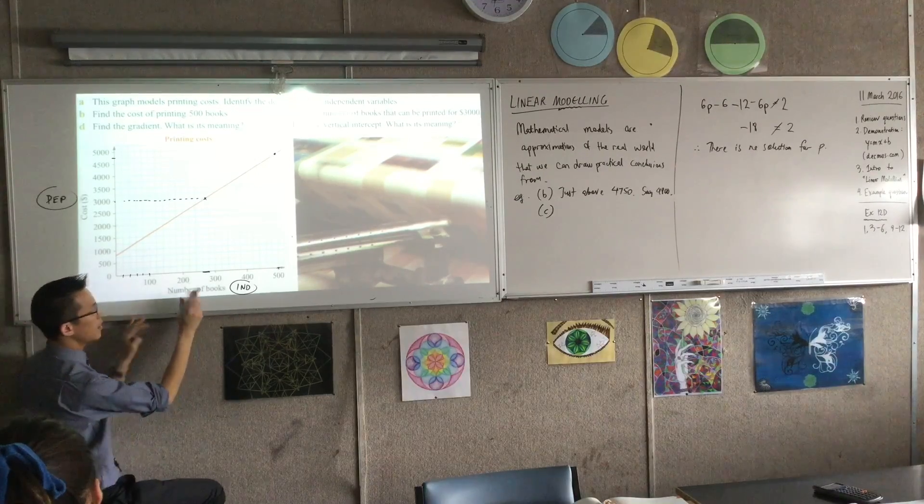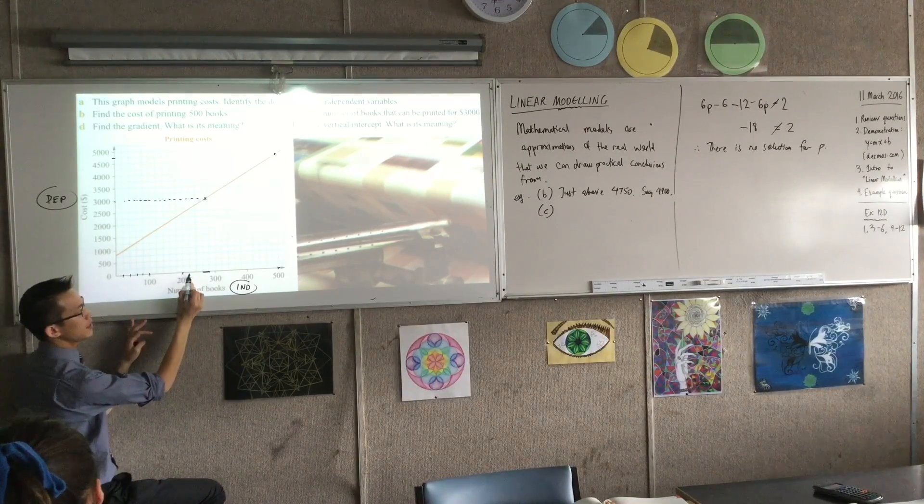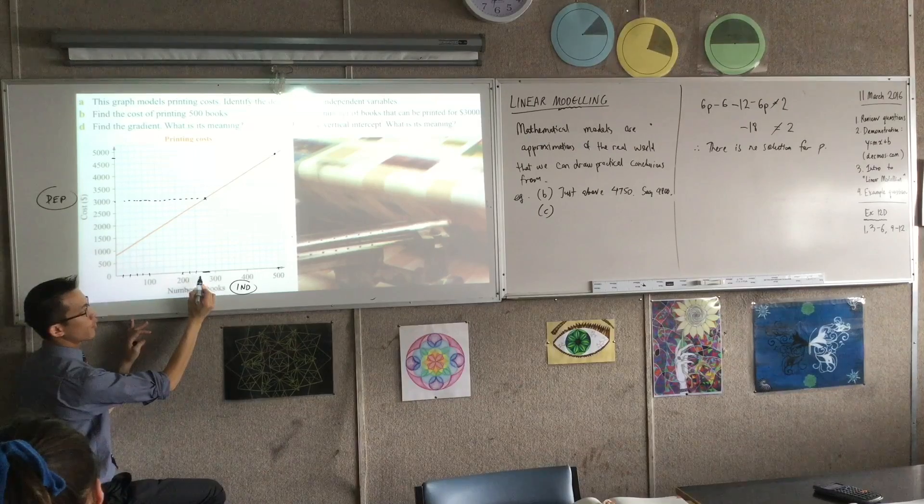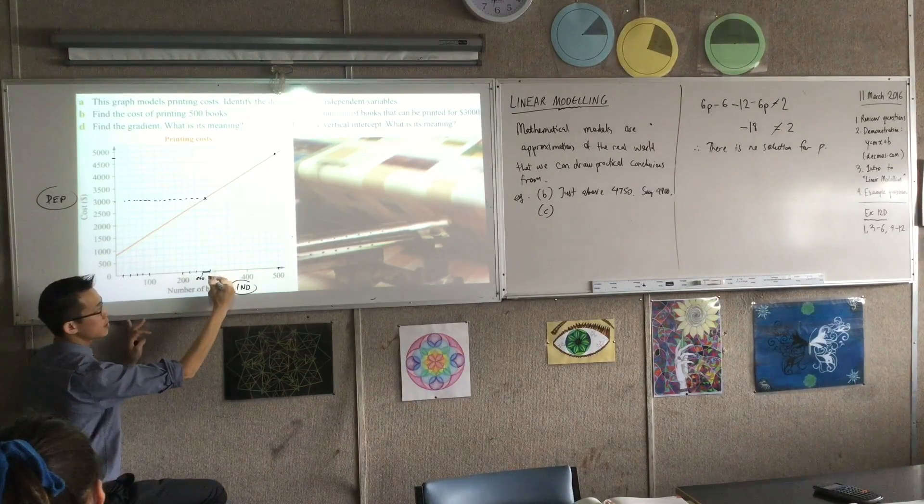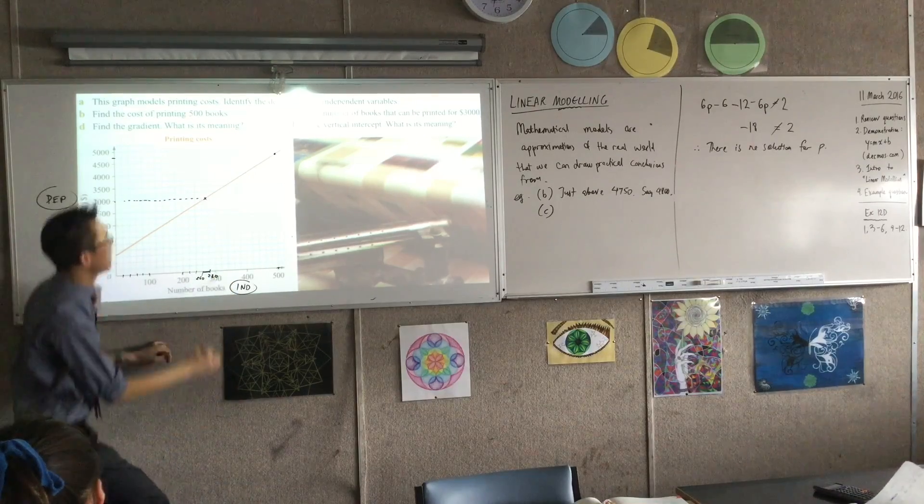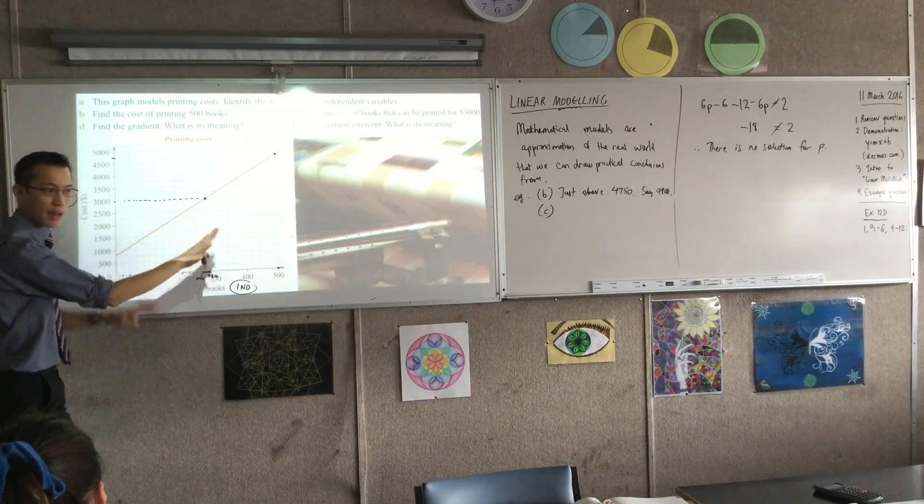So therefore here, this looks like 200, 220, 240. This is 260, which means the next one is 280. And it looks like I'm just underneath that. Are you happy with how I've read that?